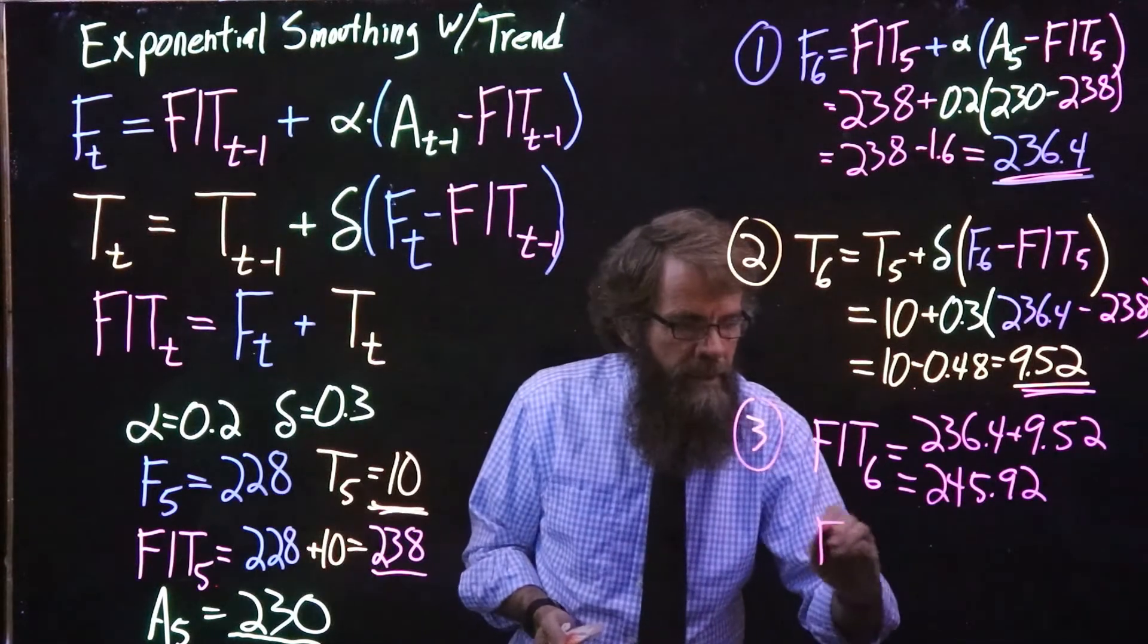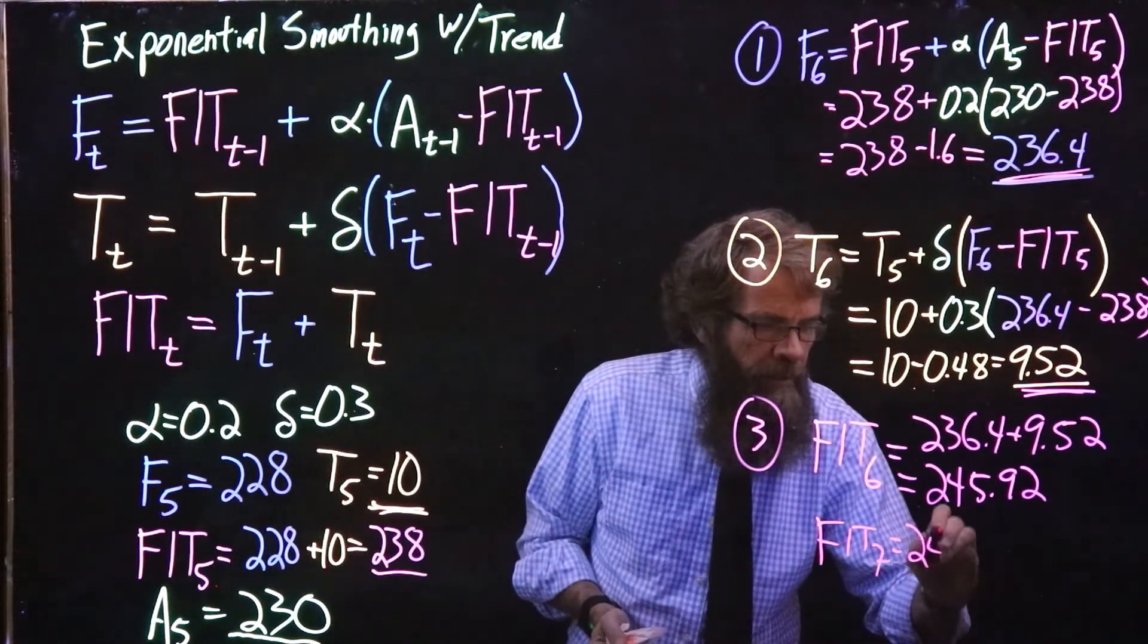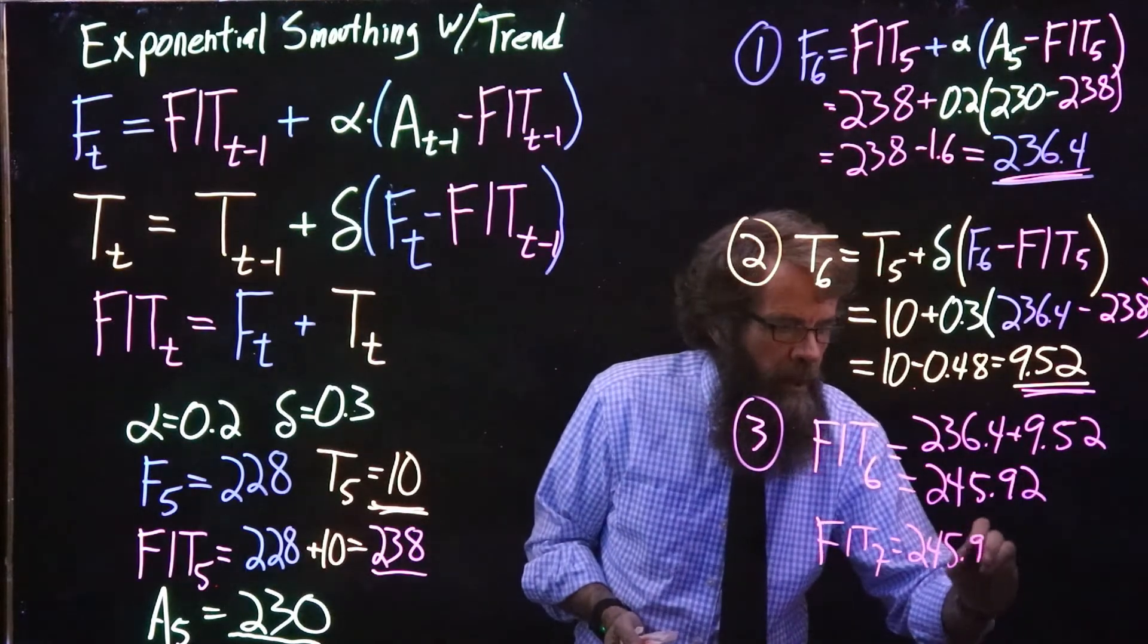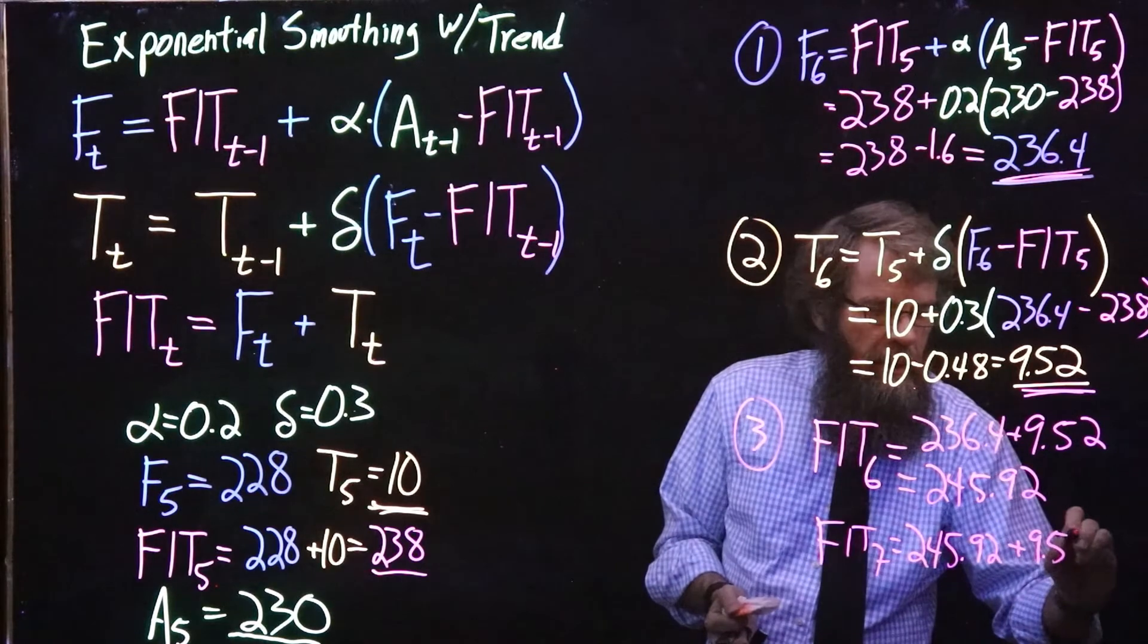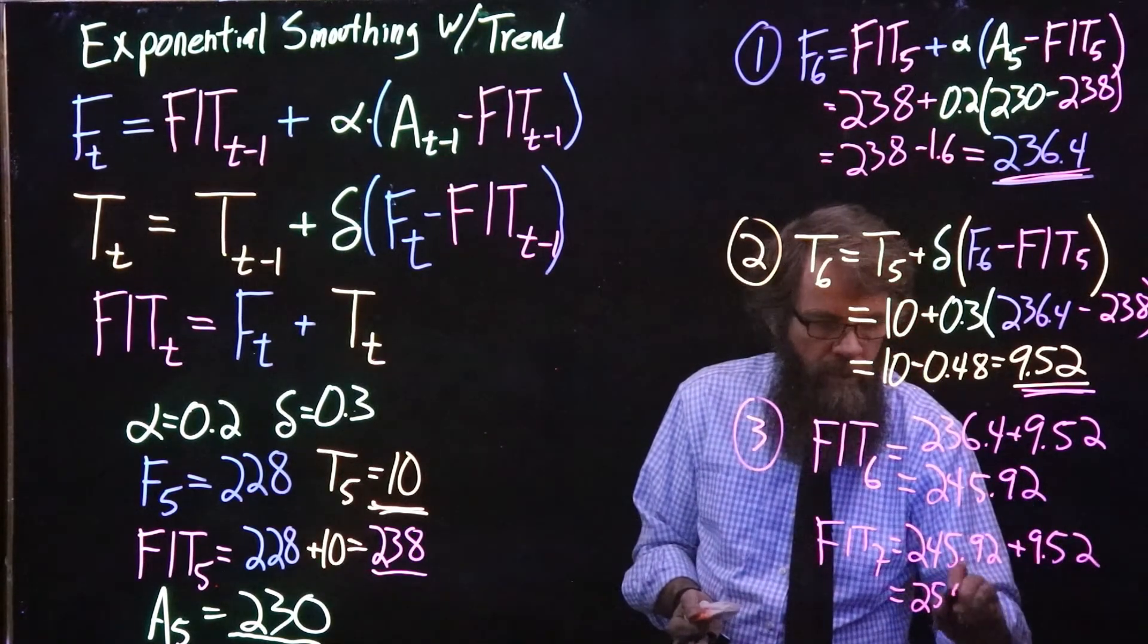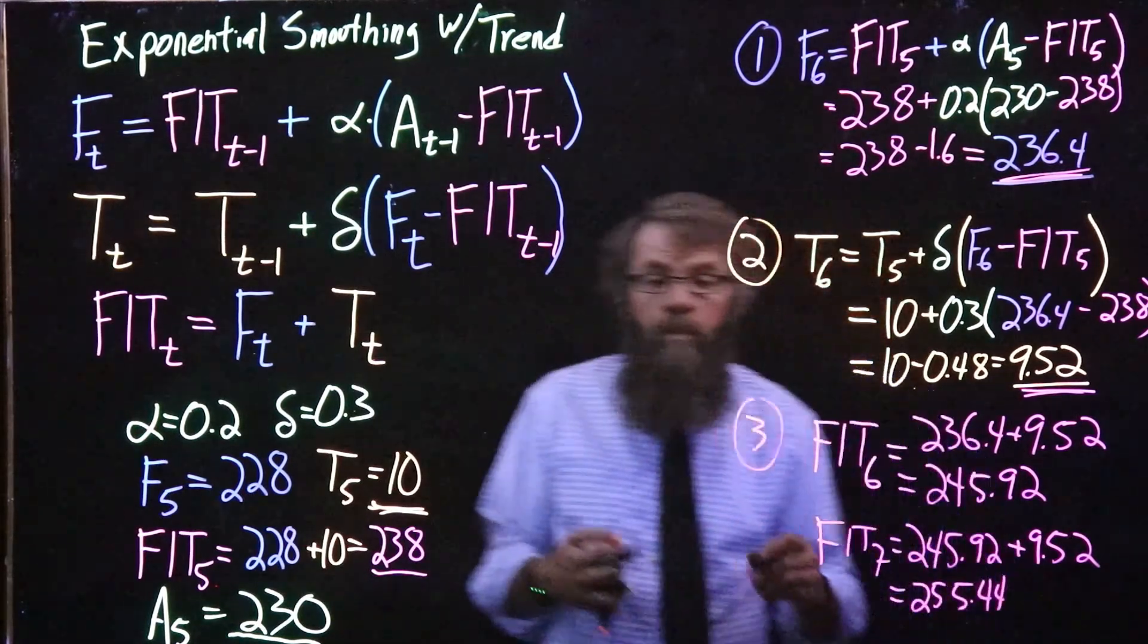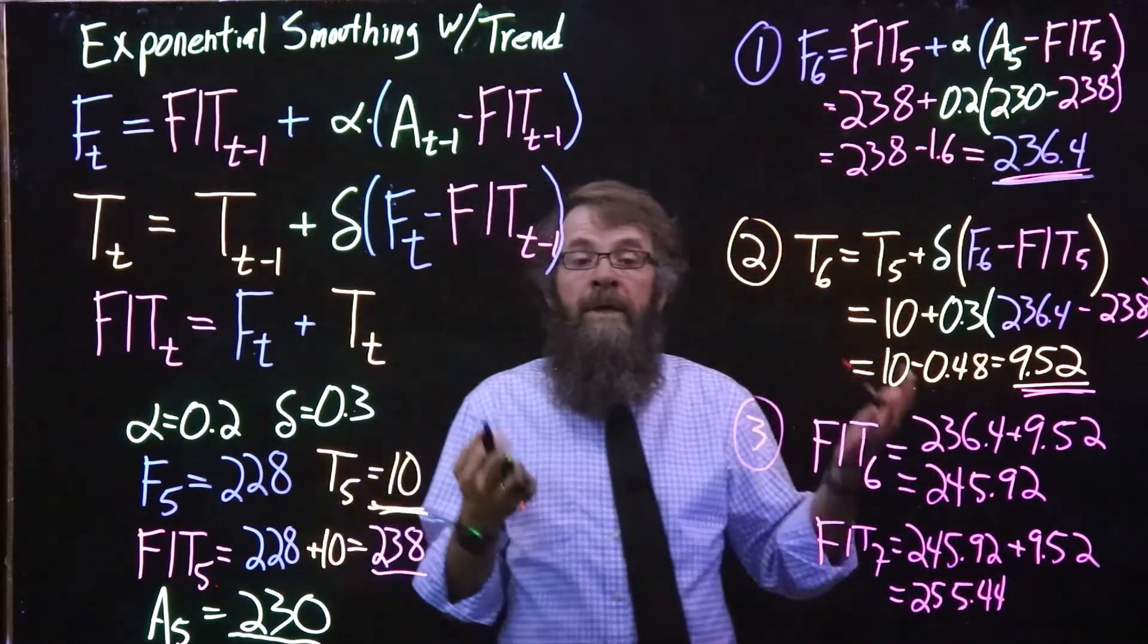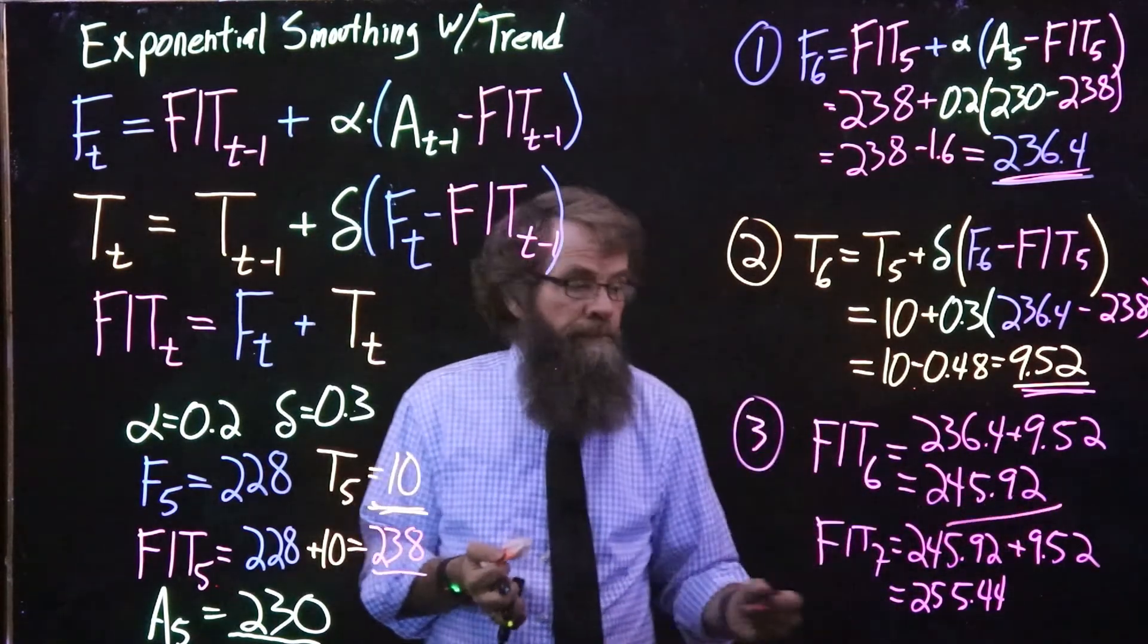So the forecast including the trend for period 7 is 245.92 plus 9.52, so that gives us 255.44.